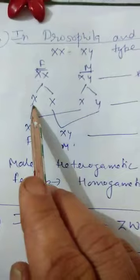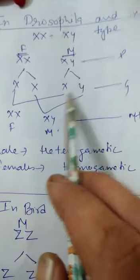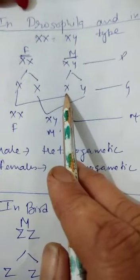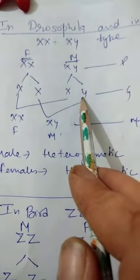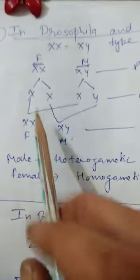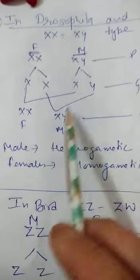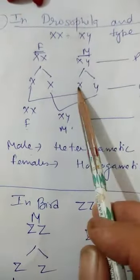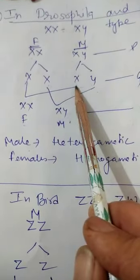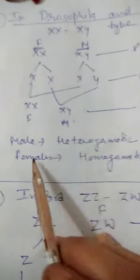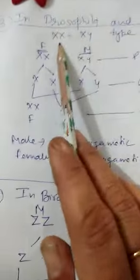In Drosophila and humans, females are XX and males are XY. Males produce two types of sperm: 50% bearing X and 50% bearing Y. Females produce only X-bearing eggs. When an X egg fertilizes with an X-bearing sperm, a female forms; with a Y-bearing sperm, a male forms — a 50:50 chance. Males are heterogametic (two gamete types) and females are homogametic (one gamete type).